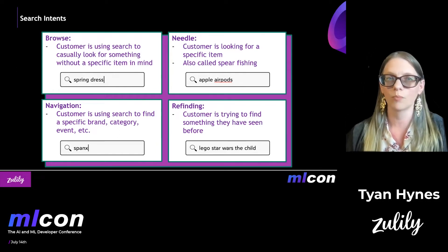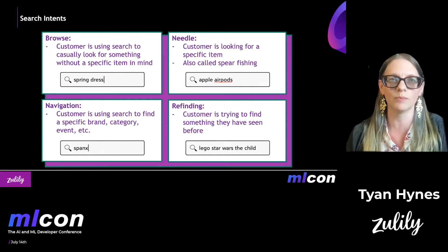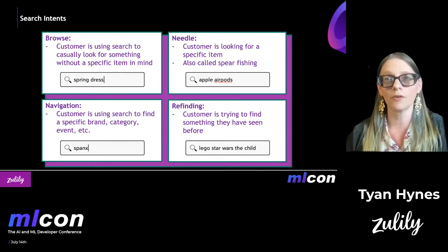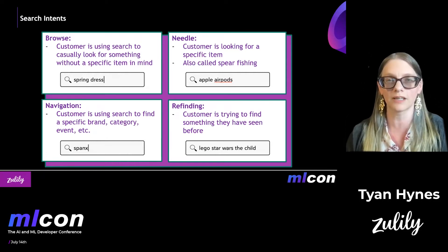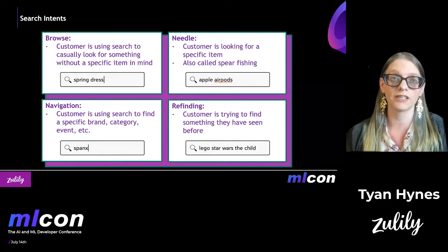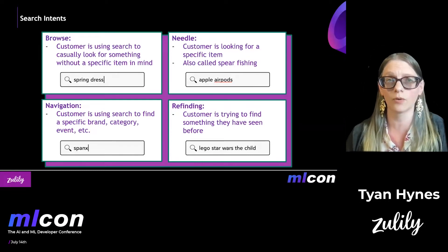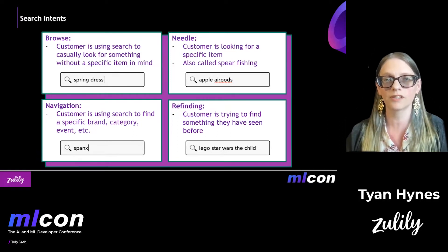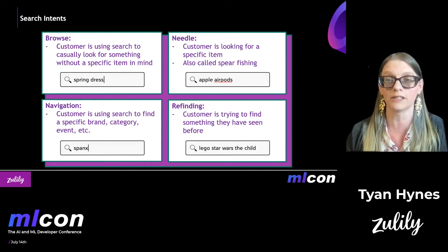Let's talk about search intents — the different ways that somebody might interact with your site. Browse is one example: a customer is using search to casually look for something without a specific item in mind, like the online equivalent of window browsing. Needle is where the customer is looking for a specific item — you might also have heard this called spear phishing. Navigation is another common way people use search: finding a specific brand, category, event, or help. And customers also use search to refine a particular item they've searched for or reviewed recently on the site.